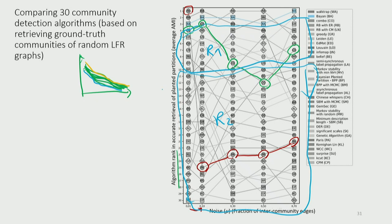Some algorithms perform consistently well — for example, the walktrap algorithm from 2004, which is based on random walks, has a pretty decent performance. This illustrates that simple ideas can work very well. Graph neural networks, in comparison, are terrible for this task and take much longer, while a random walk idea from 20 years ago is excellent and difficult to outperform.